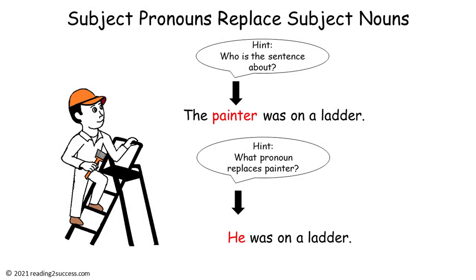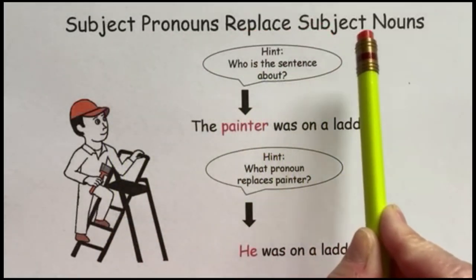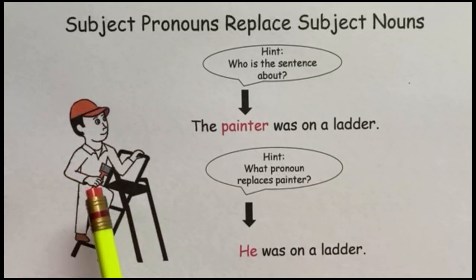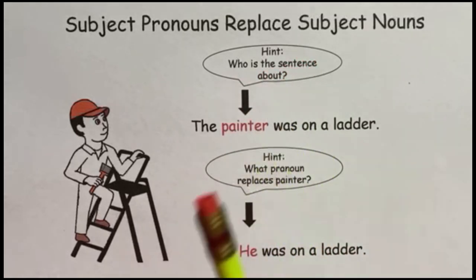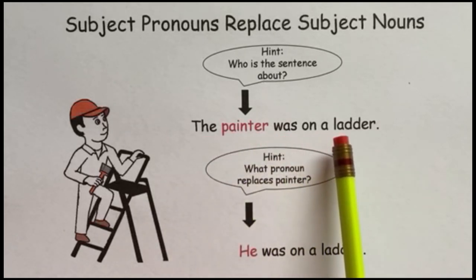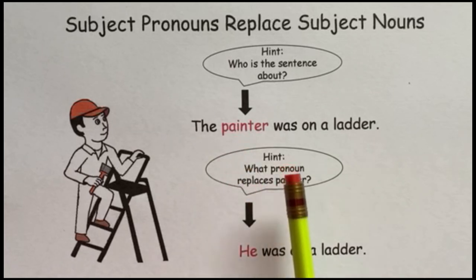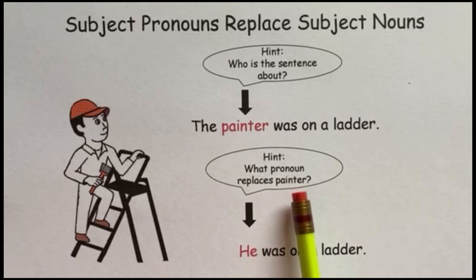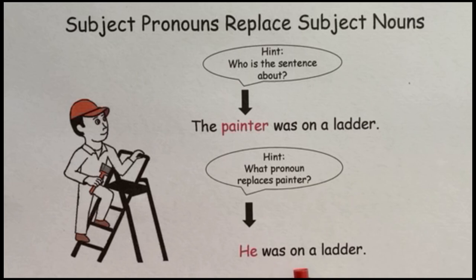Before starting the first practice page with kids, review this template. Subject Pronouns replace subject nouns. Look at the picture — it is a man who is a painter. The first hint: who is the sentence about? Read the sentence: The painter was on a ladder. Who is the sentence about? Painter. Next hint: what pronoun replaces painter? We know he's a painter and we know he is a man, so the pronoun would be 'he.' He was on a ladder.